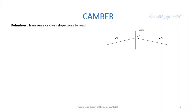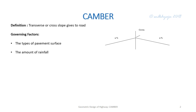Camber is a cross slope provided to the pavement surface, forming a crown at the center of the road — this slope is called camber. The main governing factors of camber are the type of pavement surface — whether it is concrete pavement, bituminous pavement, gravel, or earthen — and the second factor is the amount of rainfall intensity.